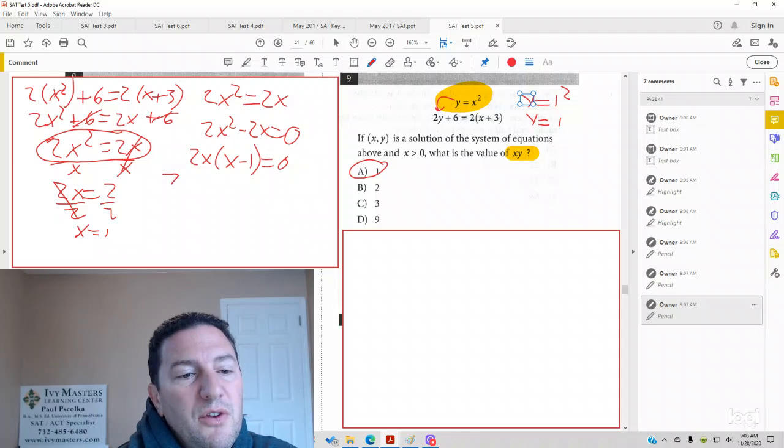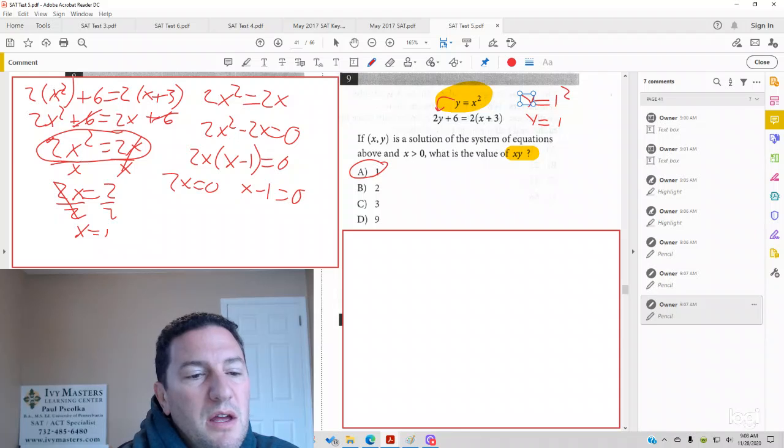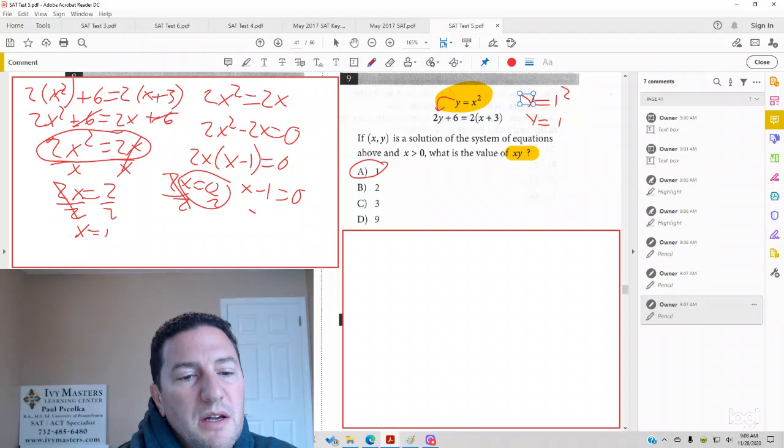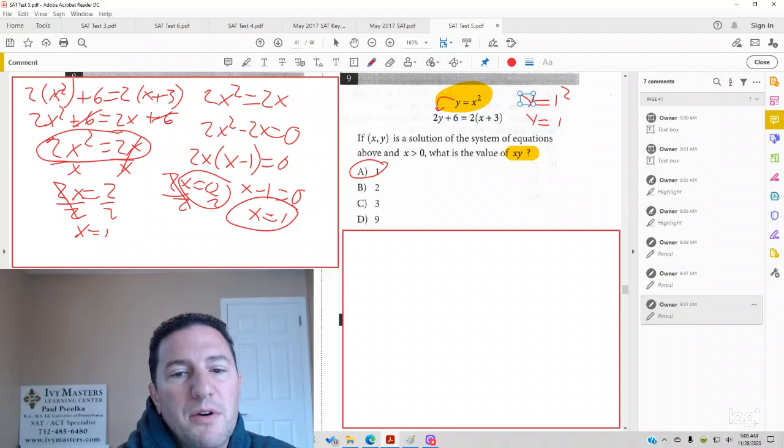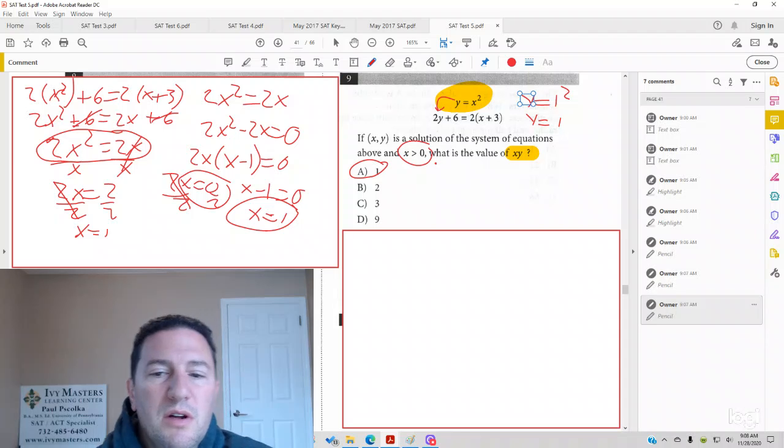And now you have two equations. 2x equals 0, x - 1 equals 0. And if you divide both sides by 2 over here, you get x equals 0. Add 1 to both sides here, and you get x equals 1. But remember, x has got to be greater than 0. So, that's why 1 is our solution.